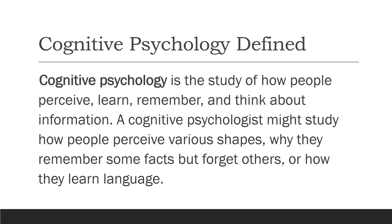A cognitive psychologist might study how people perceive various shapes, why they remember some facts but forget others, or how they learn language. It may be an advantage if you have a background in biological psychology, but I'm not saying these two courses are the same. Biological psychology explains the biological side of cognitive psychology — which parts of the brain get active whenever we engage in certain information processing.